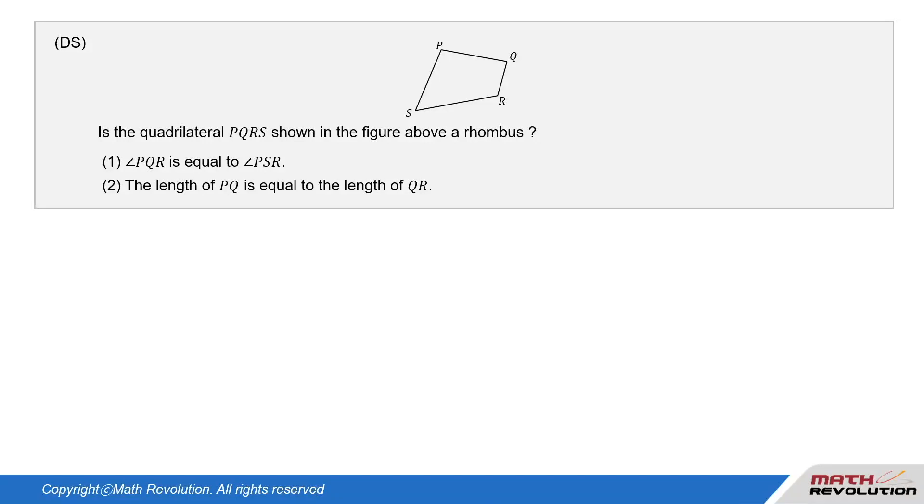DS question. Is the quadrilateral PQRS shown in the figure above a rhombus? Condition 1: Angle PQR is equal to angle PSR. Condition 2: The length of PQ is equal to the length of QR.